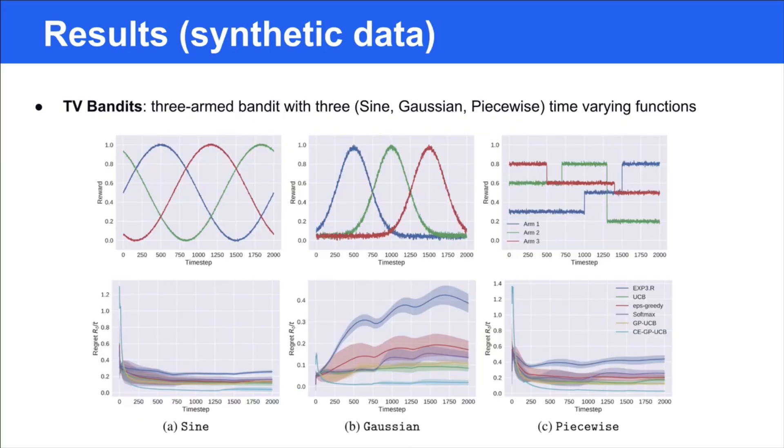We thoroughly evaluate the proposed algorithm on both synthetic data and practical online HPO problems. First, we evaluate two variants of the CE-GP-UCB on synthetic data. Specifically, we consider the finite arm bandit setting, where each arm is assumed independent with kappa equal to L, and the BO setting, where the candidates are correlated with kappa equal to SE or the Matérn kernels. For the bandit setting, three different kinds of time-varying functions are considered: sine, Gaussian, and piecewise shown in the above figures. We compare our algorithm with other time-varying bandit algorithms and the GP-UCB with a Bernoulli sampling strategy.